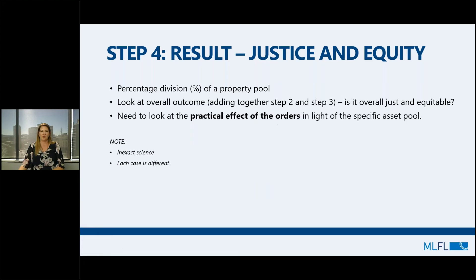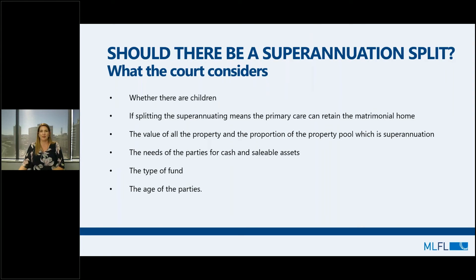The fourth and final step is to look overall at the percentage we've arrived at considering contributions and future needs factors, and ask: is that overall just and equitable for these particular parties? We also consider how to practically implement it — if we're going to split assets 60/40, does that mean we need to sell some property? If we did 58/42 instead, could someone keep a property? We also factor in superannuation, bearing in mind that depending on the age of the parties, it can be very desirable or no one wants it because they can't access it for a long period.